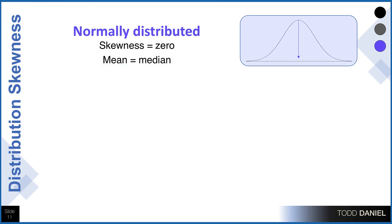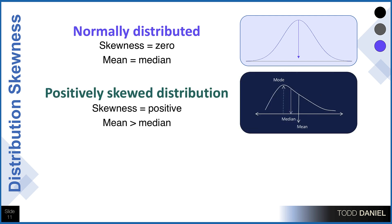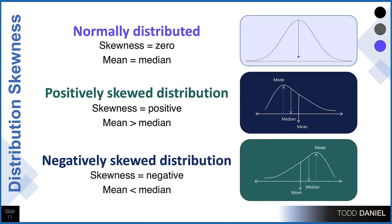When data are normally distributed, they take on a bell-shaped curve and the skewness is zero — the mean and the median are the same. But when scores are pulled out to the right (the positive direction), we have a positively skewed distribution: the skewness measure is positive and the mean is greater than the median. If scores are pulled out to the left (the negative direction), that is a negatively skewed distribution: the skewness measure is negative and the mean is less than the median.